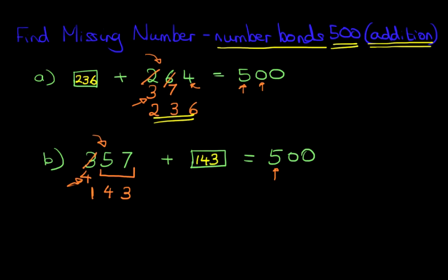Now the second method is a slightly shortcut method. Once you become more comfortable with numbers, more comfortable with number bonds to 10, 20, 50 and 100, you can short circuit the process we are using. If you're not comfortable, then go through step-by-step as we've shown in example A.